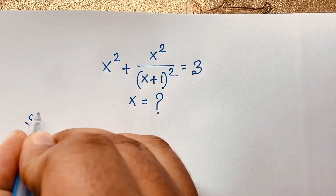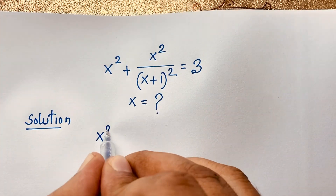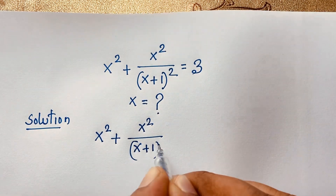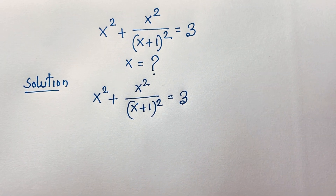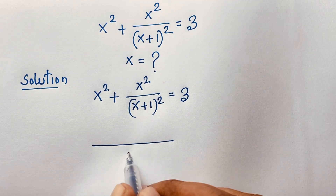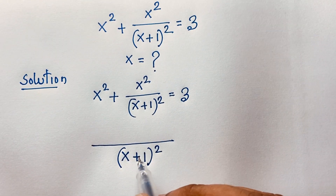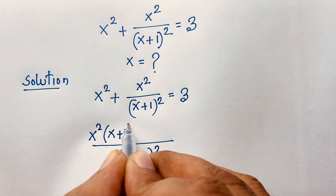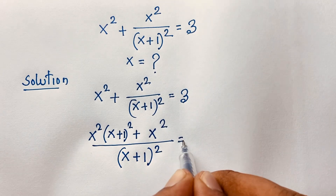So, solution. Our question is x squared plus x squared over (x plus 1) whole to the power 2, is equal to 3. The least common value is (x plus 1) whole to the power 2. Taking this value, it will be x squared times (x plus 1) whole to the power 2 plus x squared, equal to 3.